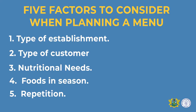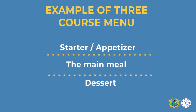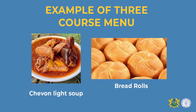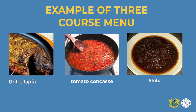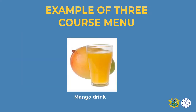Based on these five factors, let's plan a lunch meal for a restaurant. We will plan a three-course meal: you can have Shivon light soup with bread toast as a starter; the main meal can be grilled tilapia, tomato concassé, and shito; and because mango is in season, you can prepare a mango fool with ice cream as dessert. This brings us to the end of menu planning.